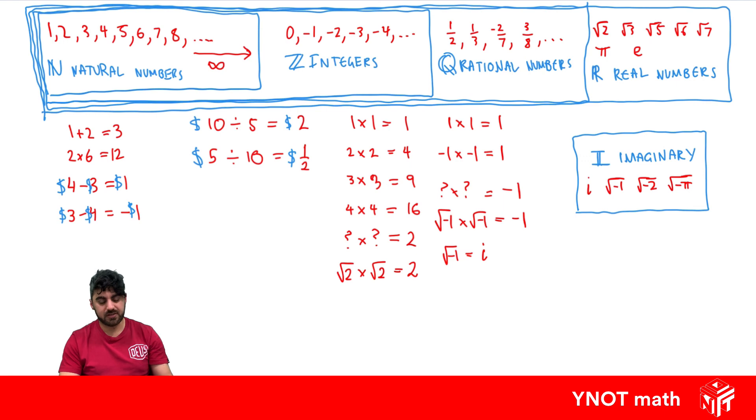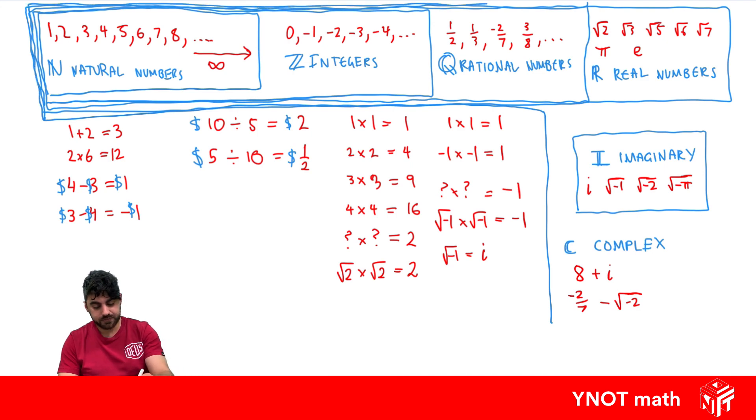And finally, we have our last set of numbers, called complex numbers, with a double-stroke C. And a complex number is just a real number plus an imaginary number. So we can take any real number, which means we can take any one of these numbers and add it or subtract it with an imaginary number. And this makes a complex number. For example, one such number might be 8 plus i. Another one could be minus 2 over 7 minus square root of minus 2. And a complex number brings all the numbers together. So we can draw a box around everything now. And everything comes together with complex numbers.